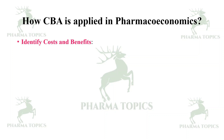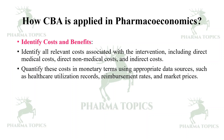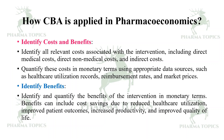How is Cost-Benefit Analysis applied in pharmacoeconomics? First, identify the costs and benefits — identify all relevant costs associated with the intervention including direct medical costs, direct non-medical costs, and indirect costs. Quantify those costs in monetary terms using appropriate data sources such as healthcare utilization records, reimbursement rates, and market prices. Then identify and quantify the benefits of the intervention in monetary terms — benefits can include cost savings due to reduced healthcare utilization, improved patient outcomes, increased productivity, and improved quality of life.